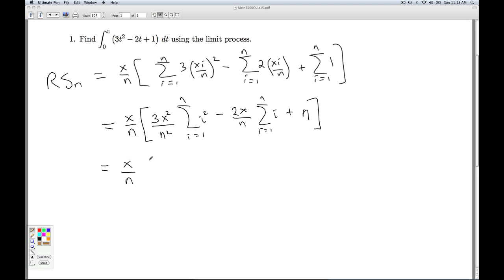So I have x over n times 3x squared over n squared. The sum of i squared from i goes from 1 to n is n times n plus 1 times 2n plus 1, all divided by 6, minus 2x over n. The sum i from 1 to n is n times n plus 1 over 2, plus n.